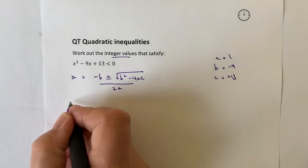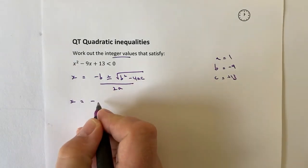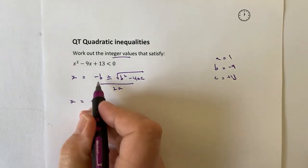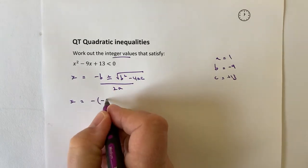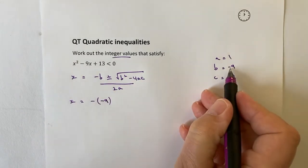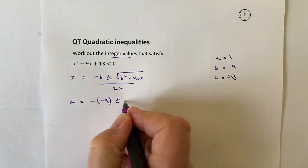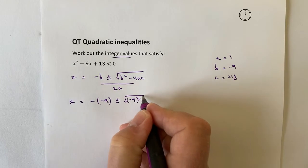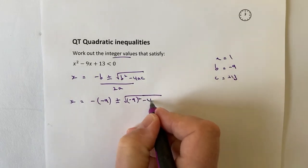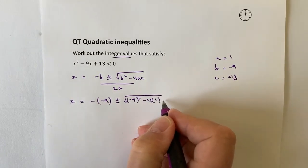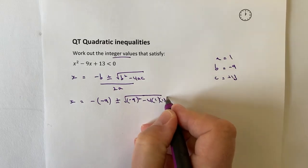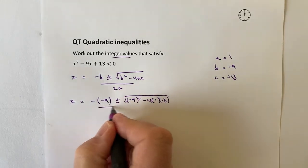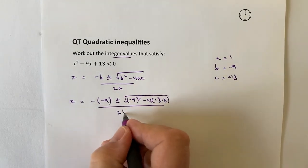Let's have a look at that. I tend to use brackets for this, because if I've got minus b, it's minus minus 9, and it reminds me that I need to make that a positive. Then I've got minus 9 squared, minus 4 times 1 times 13, and that's all over 2 times 1.